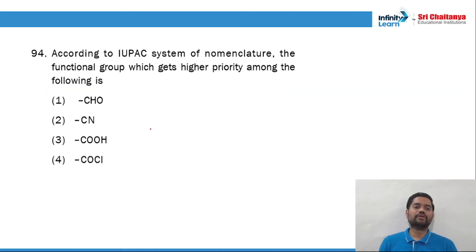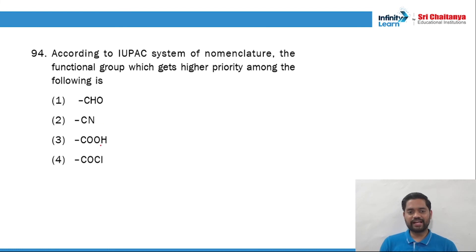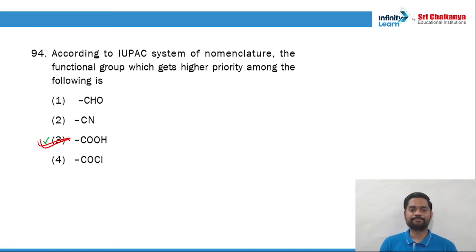Question 94: according to the IUPAC system of nomenclature, the functional group with highest priority among the following. Carboxylic acid gets the highest priority without any doubt. Question 94, option number 3.